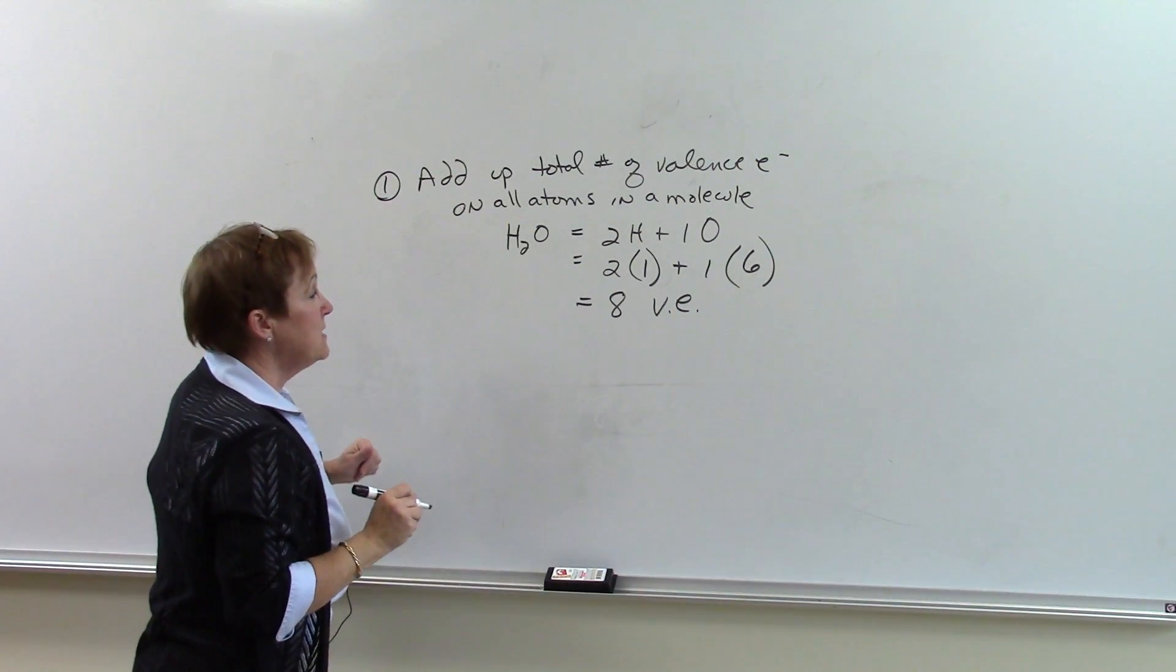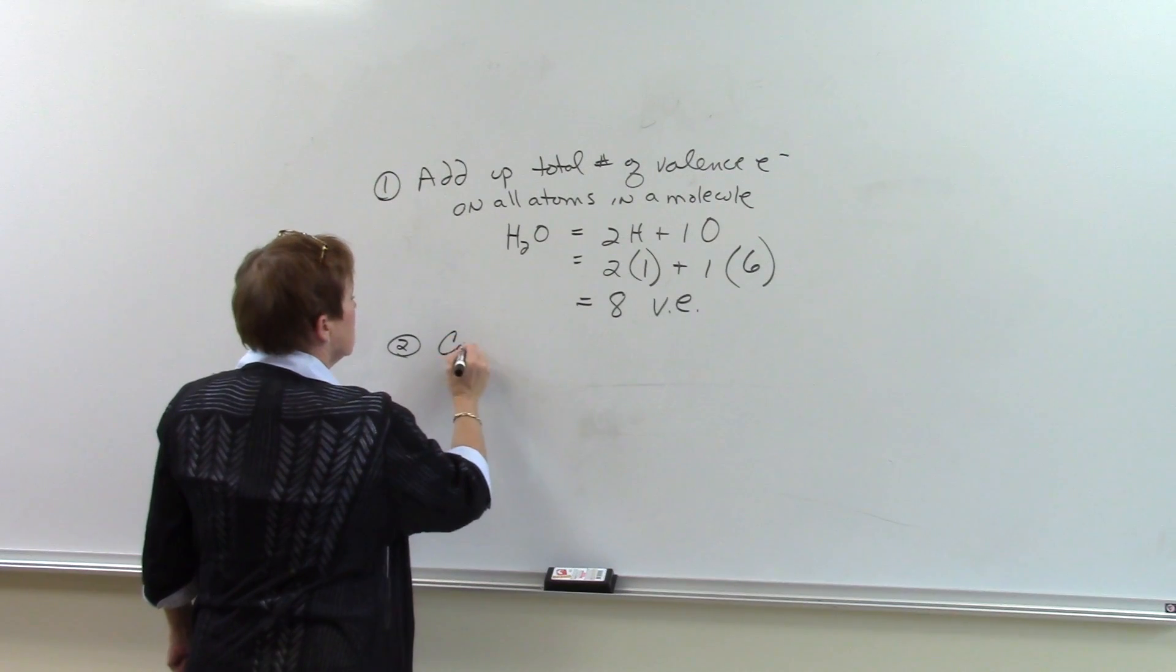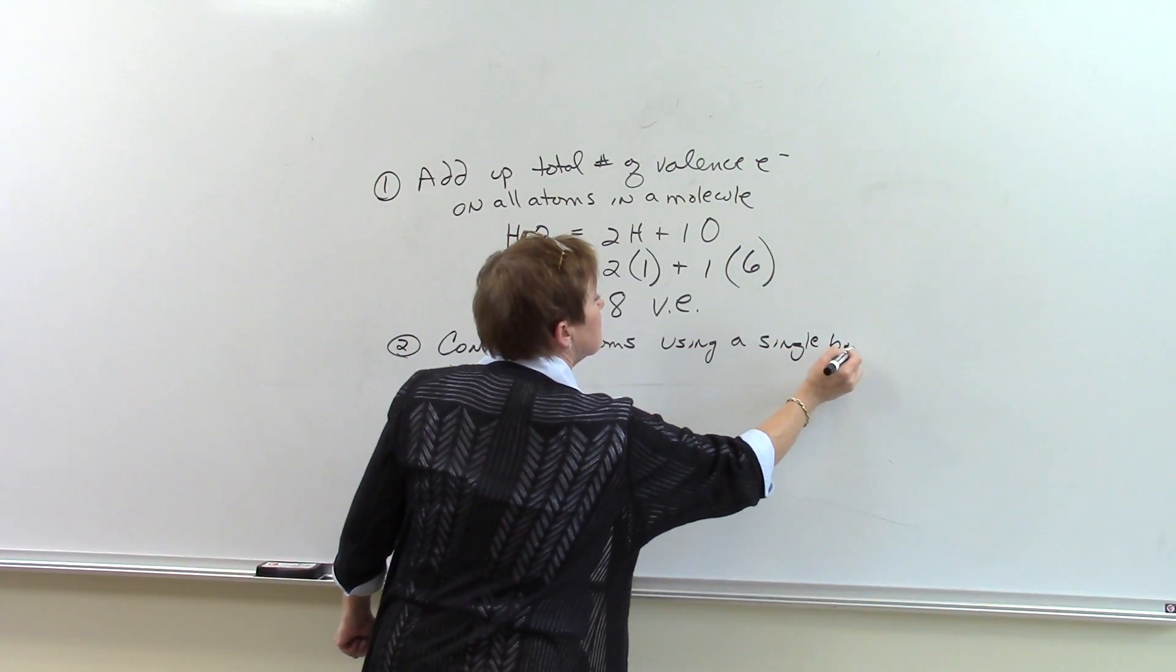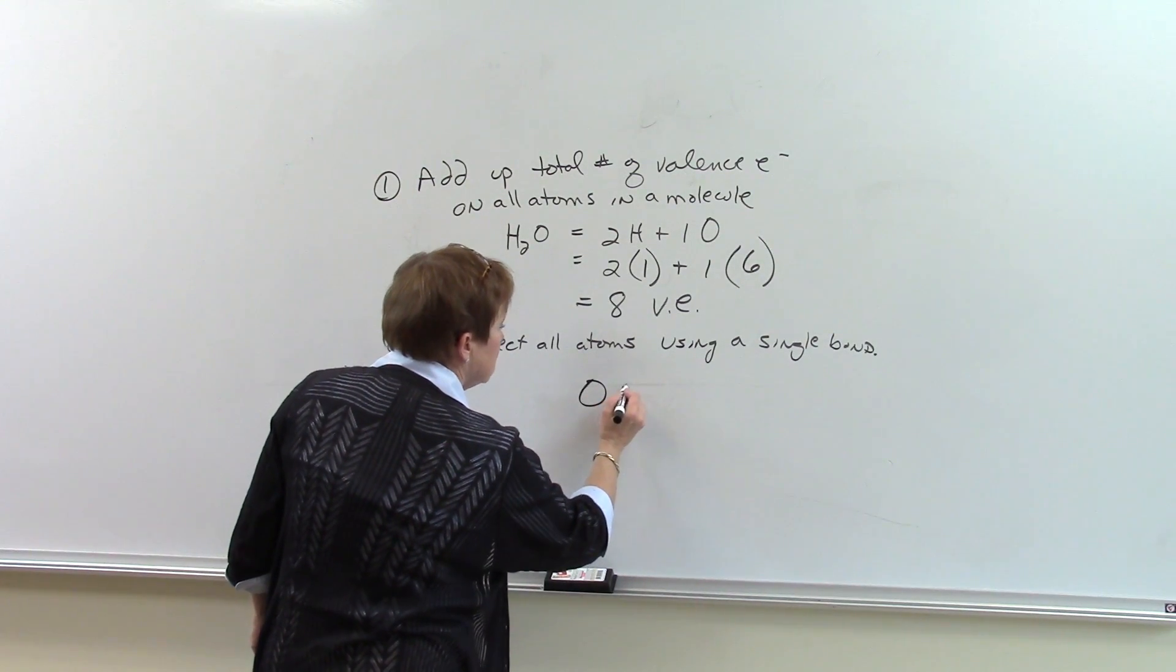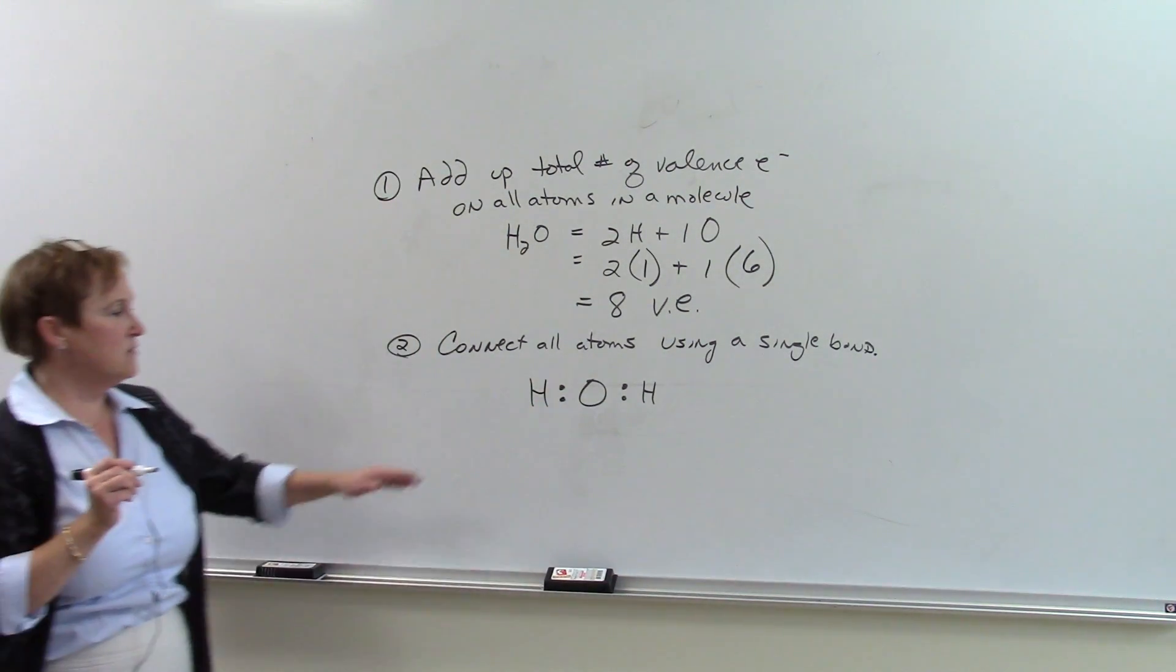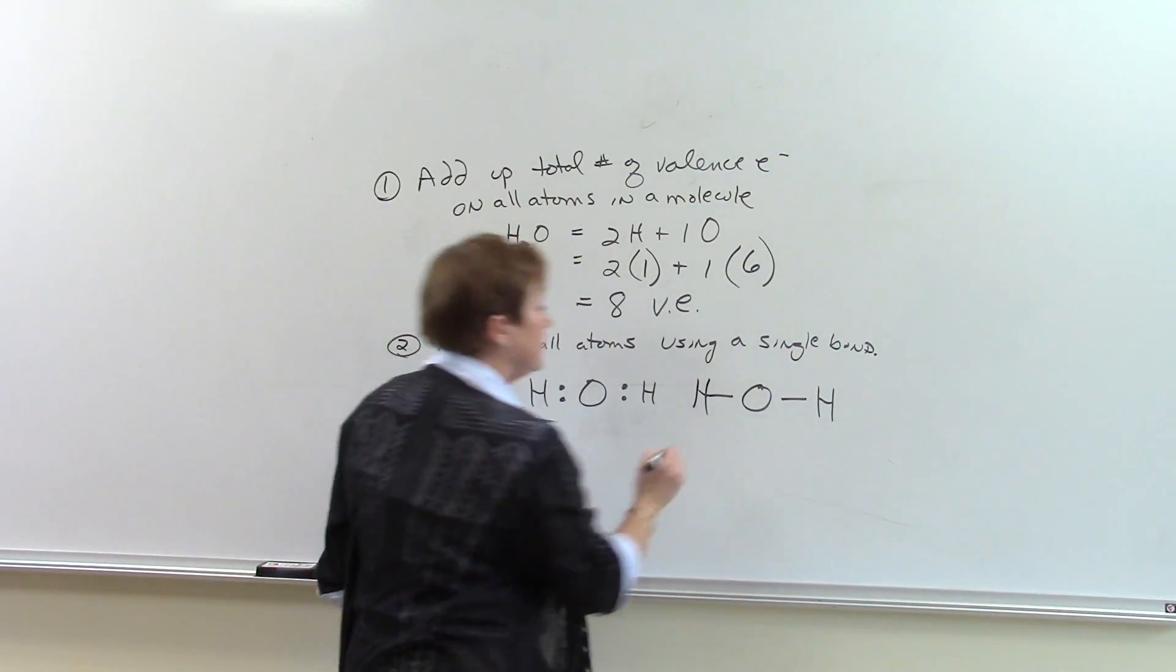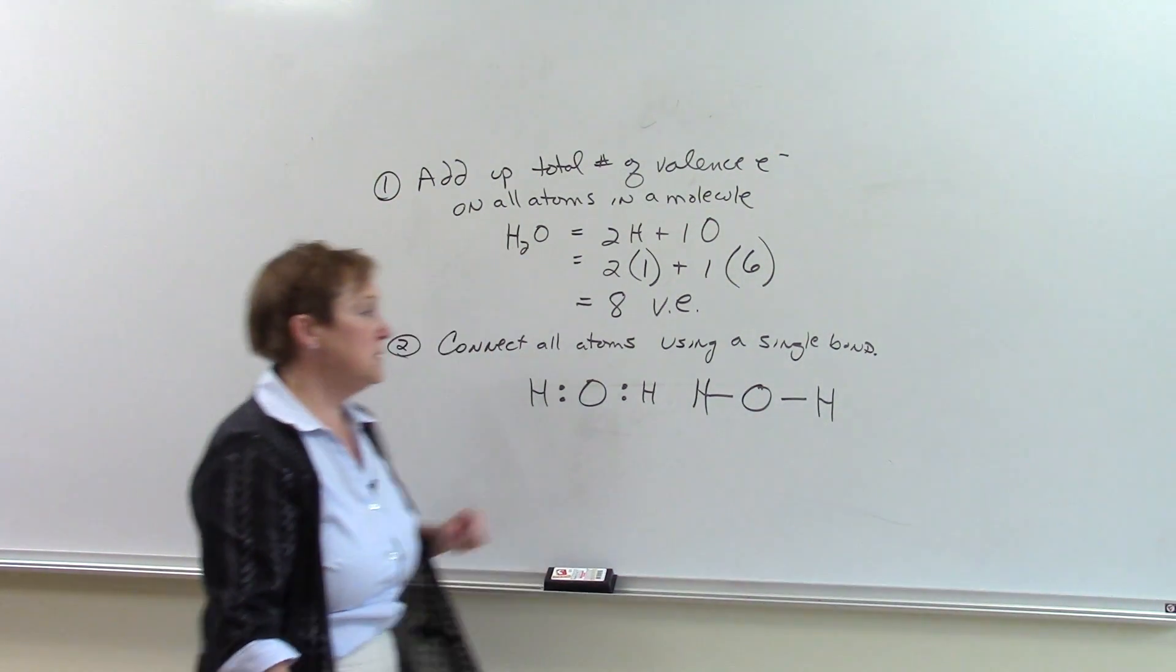What do we do next? Step number two is connect all atoms using a single bond, a single covalent bond. We can do it in two ways. We can show a covalent bond as being two electrons where each dot is an electron. That gets to be kind of clunky drawing all those dots. So what we commonly do is a straight line like this represents two bonding electrons. So we connected the atoms. Usually the unique atom will be in the middle.